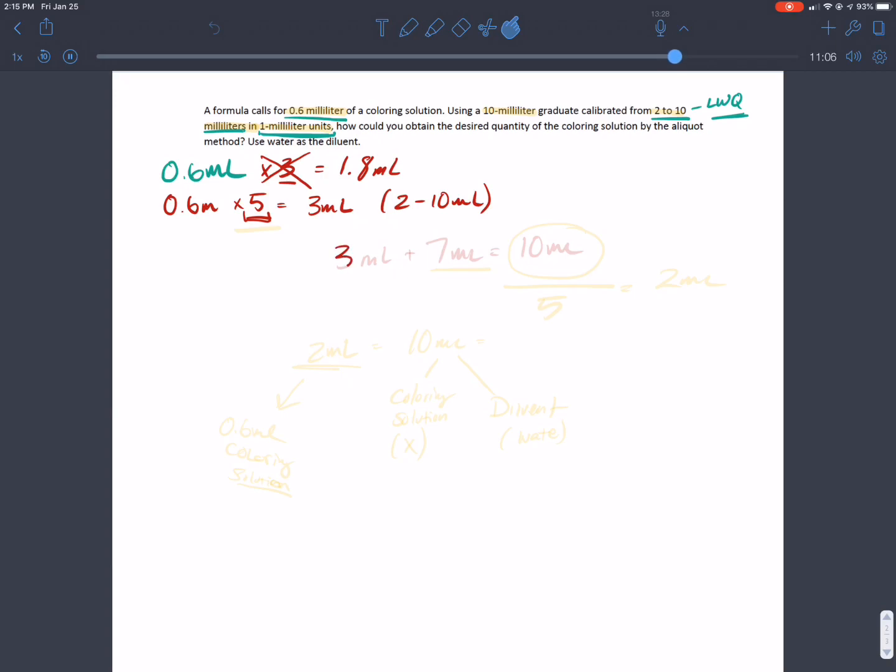So for example, if we were to do 3 mLs plus 7 mLs of the diluent, that's going to give us a total of 10 mLs. So this 10 mLs is actually divisible by 5, and you always want it to be divisible by the factor that you multiplied that 0.6 by.